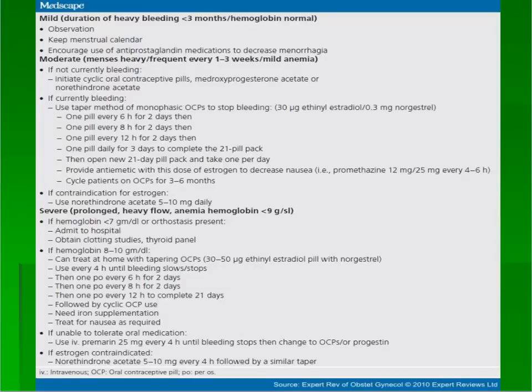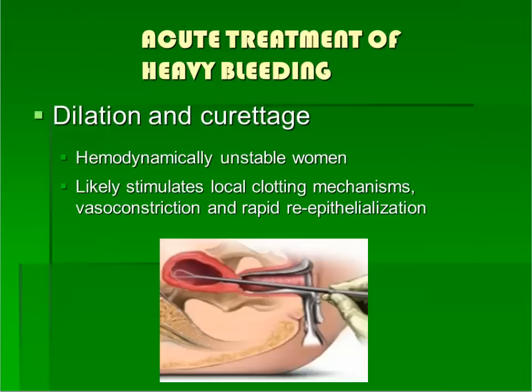This table is a helpful reference for the dosing of medication in patients with varying degrees of abnormal uterine bleeding. Unstable patients, or those who do not rapidly respond to medical therapy, may require surgical treatment, which can include a dilation and curettage, also known as a D&C.